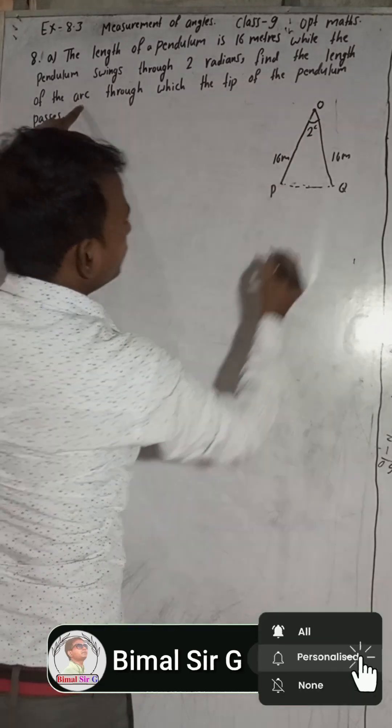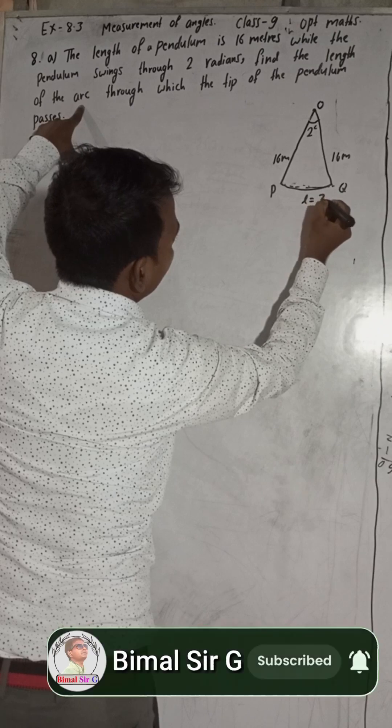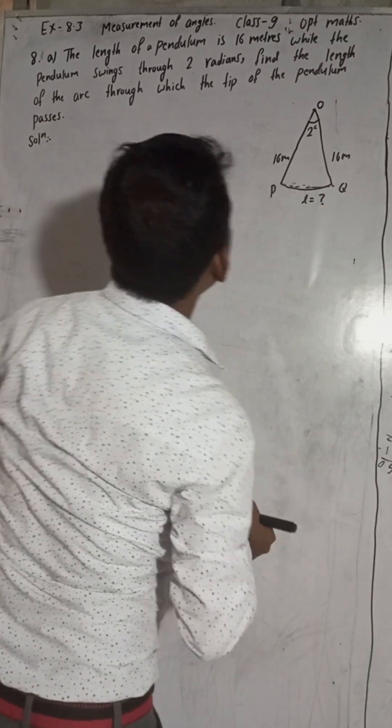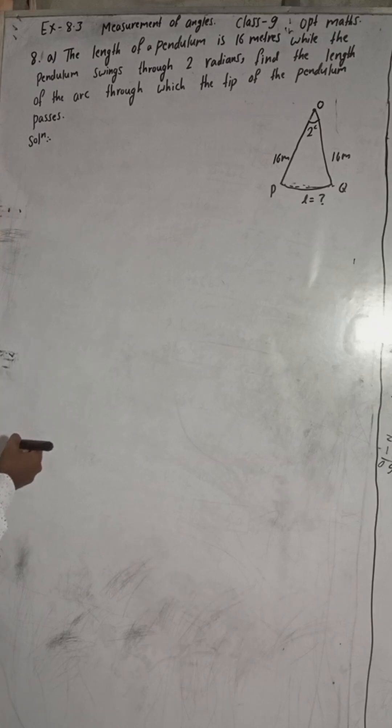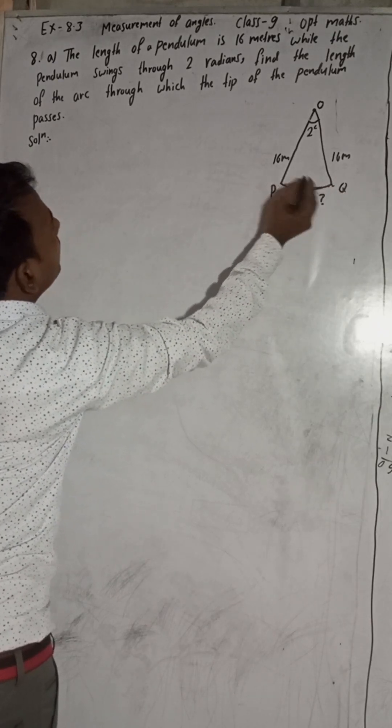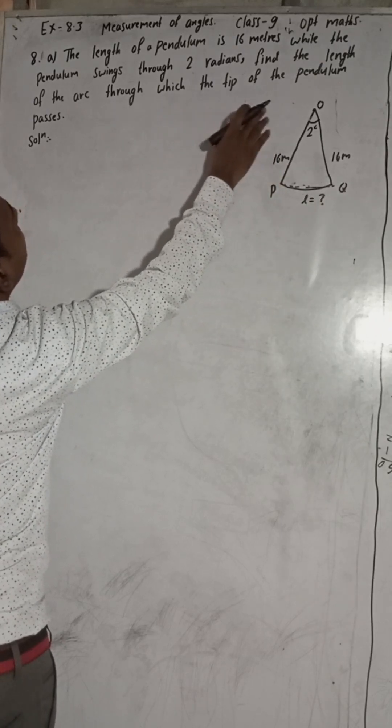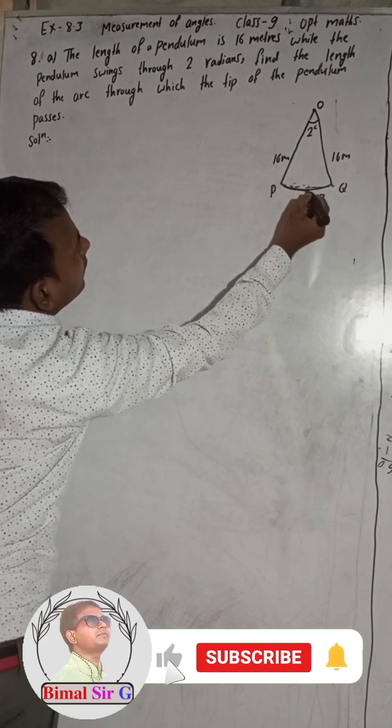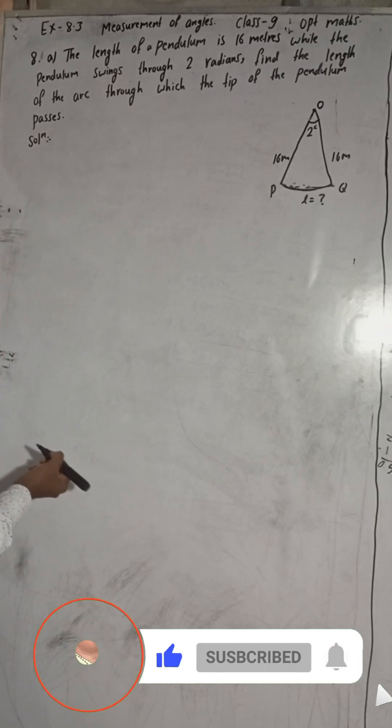Find the length of the arc. So this arc length we have to find. Through which the tip of the pendulum passes. Tip of the pendulum means this is the tip. Tip of the pendulum passes. Through which, find the length of the arc. So length of this arc which passes through the tip of the pendulum, so this is our L.